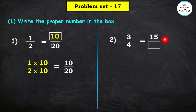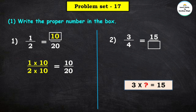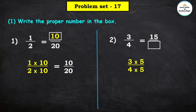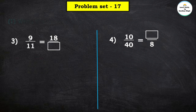The first fraction's numerator is 3 and the second fraction's numerator is 15. Since 15 is a bigger number, we ask: 3 multiplied by which number equals 15? 3 multiplied by 5 is 15. So we multiply both numerator 3 and denominator 4 by 5: 3 fives are 15 and 4 fives are 20. Therefore 15 upon 20 is the equivalent fraction of 3 upon 4.